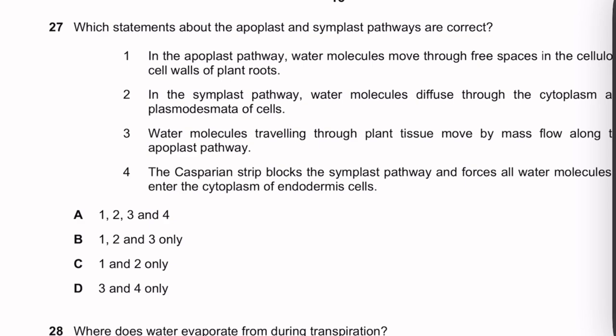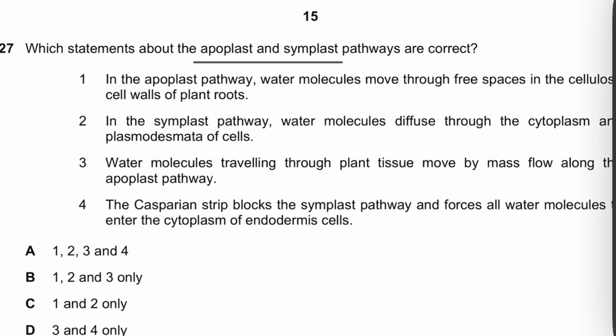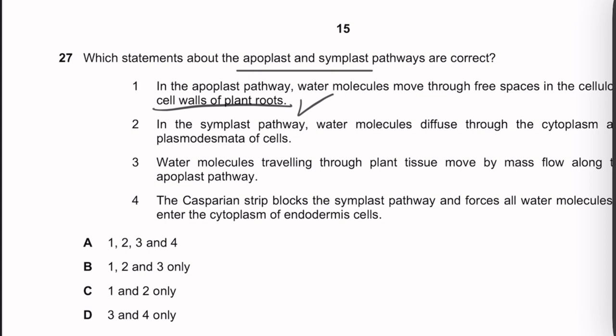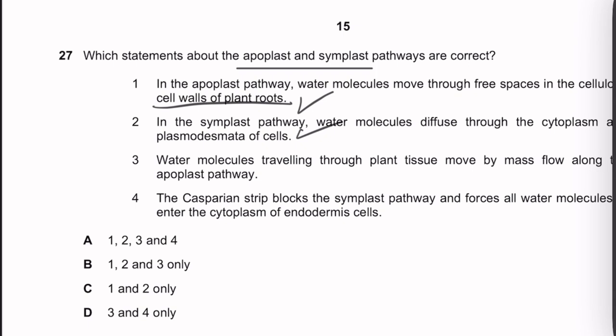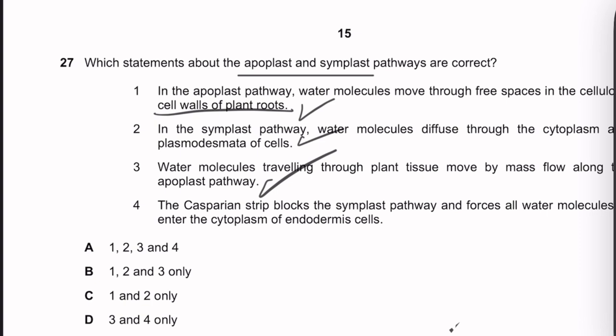Question 27: Which statements about the apoplast and symplast pathways are correct? Statement 1: apoplast pathway — water molecules move through free spaces in the cellulose cell walls — correct. Statement 2: symplast pathway — water molecules diffuse through the cytoplasm and plasmodesmata — correct. Statement 3: water moving through plant tissue via the apoplast moves by mass flow — correct. Statement 4: the Casparian strip blocks the apoplast pathway (not the symplast), forcing water into the cytoplasm of endodermal cells — statement 4 is wrong because it says symplast. Answer: 1, 2, and 3 only — letter B.